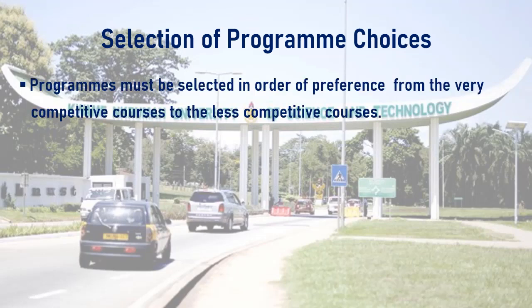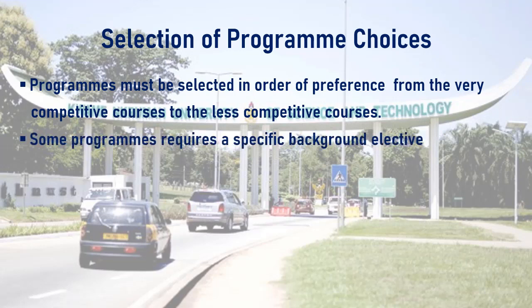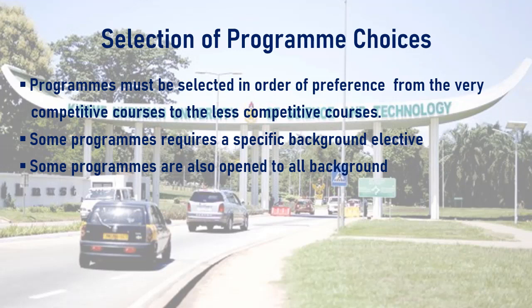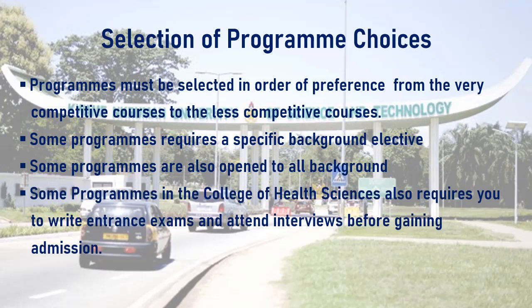Programs must be selected in order of preference, from the most competitive courses to the less competitive. Some programs require a specific background elective — for instance, programs in the engineering sciences are only available to pure science students, meaning you must have physics, chemistry, biology, and elective mathematics, plus some technical background electives. Some programs such as Bachelor of Law are open to all elective backgrounds. Some programs in the College of Health Sciences also require you to write entrance exams and attend interviews before gaining admission.